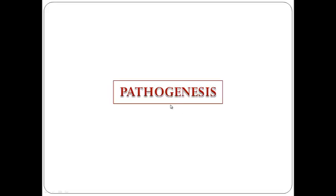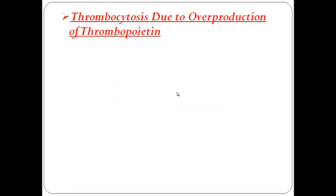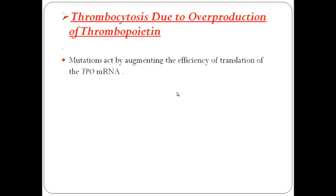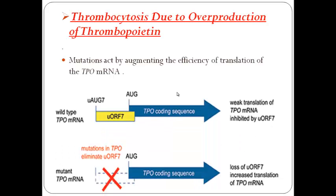The first mechanism is thrombocytosis due to overproduction of thrombopoietin. The mutations act by augmenting the efficiency of translation of thrombopoietin messenger RNA. Translation of thrombopoietin mRNA is specifically inhibited by a conserved upstream open reading frame (uORF) in the 5' untranslated region. The thrombopoietin mutation disrupts this inhibitory uORF, thereby relieving the physiological block it exerts on thrombopoietin translation, resulting in overproduction of thrombopoietin, which increases in the blood and causes thrombocytosis.